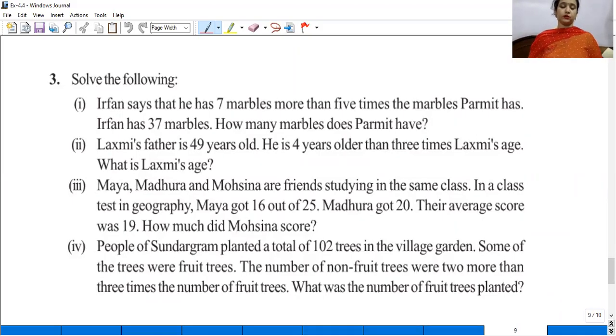Let's start with the next question. Question number 3 of exercise 4.4. Irfan says that he has 7 marbles, more than 5 times the marbles Parmeet has. Irfan has 37 marbles. How many marbles does Parmeet have?